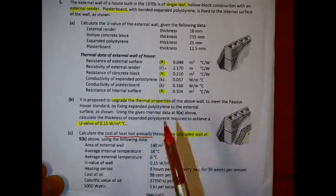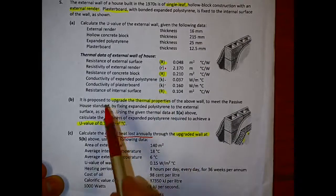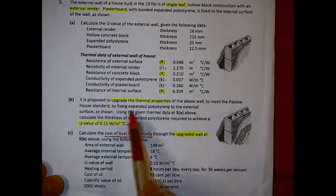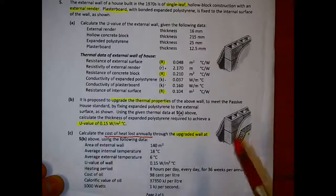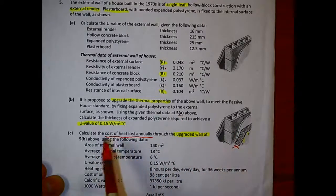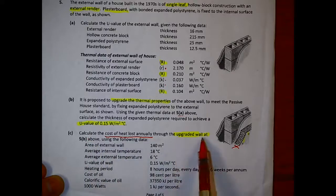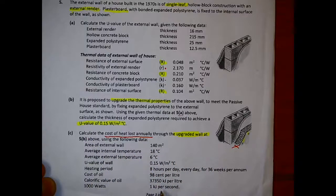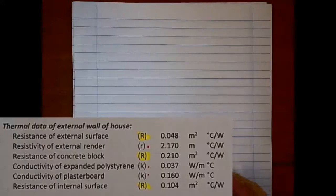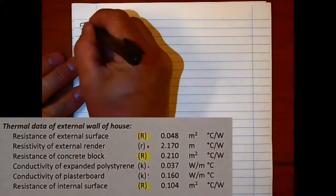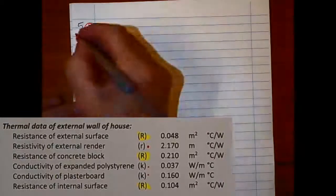Quickly looking at the thermal data, we have the R's and the conductivity. Part B, the questions about upgrading the thermal properties, and we're given a new U-value which we have to achieve with this new wall. The last part of the question is the upgraded wall. We want to work out the cost of heat loss annually with all the information given here. Don't worry too much about this at this stage because I'll be going through each of these as we meet them.